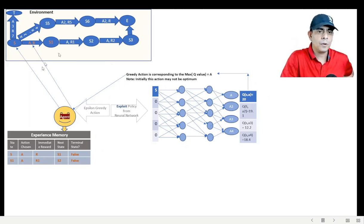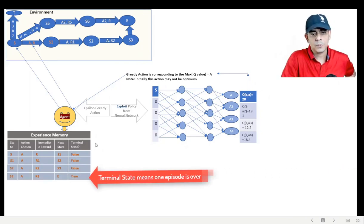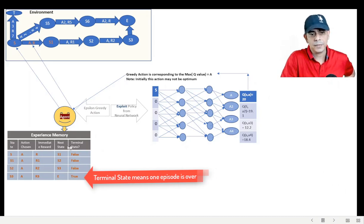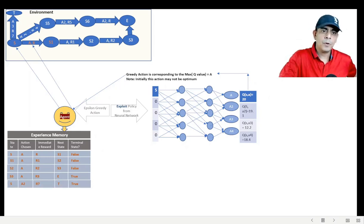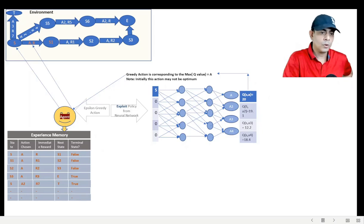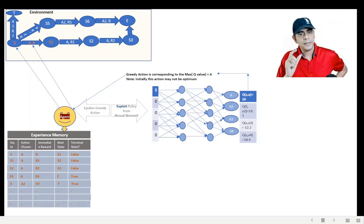You keep on doing this from S1 to S2, S2 to S3, and S3 to E. When you reach to E, you know that one episode is over because this is a terminal state, therefore it is true. Then you keep on doing further episodes and store all of them in experience memory.